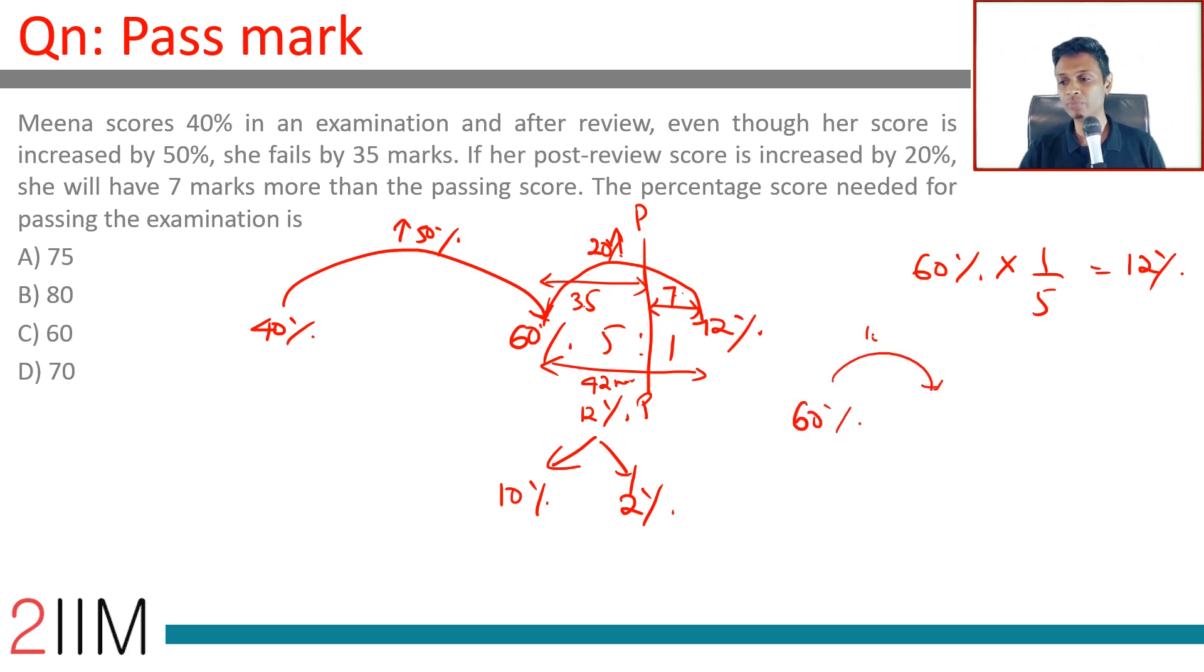From 60 percent you add 10 percent, you go to 70 percent. From here you add 2 percent, you go to 72 percent. The overall 12 percent is broken in the ratio 35 is to 7, or 10 is to 2, 5 is to 1. So the pass percentage should have been 70 percent.